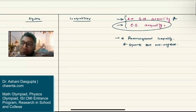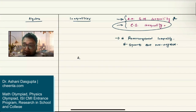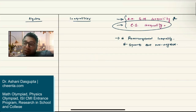We'll start with a very simple thing: the rearrangement inequality. If you have two sequences of numbers — a1 greater than or equal to a2 greater than or equal to a3 — let's do it with three numbers for the moment. We can do it with more numbers later. Let's suppose we have a greater than b greater than c.